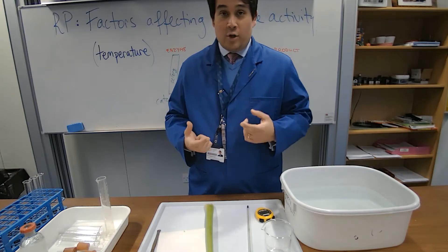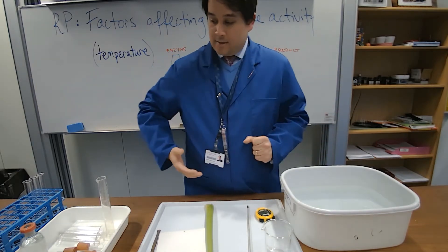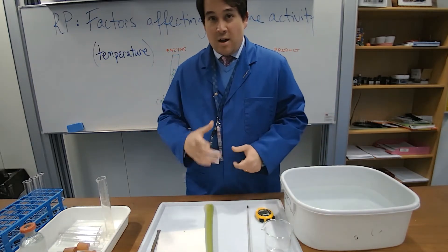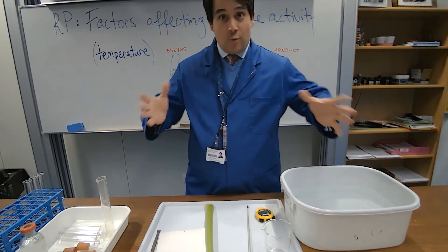So what we're going to do is we're going to try and measure that oxygen gas being produced. How are we going to do that? We're going to use water displacement, so a bit of fancy glassware. I'm going to set it up, and then I'm going to talk you through the whole process.